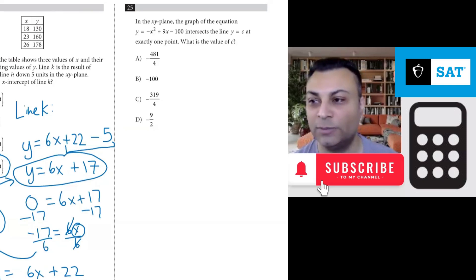Question 25. In the xy-plane, the graph of the equation y equals negative x squared plus 9x minus 100 intersects the line y equals c at exactly one point. What is the value of c?